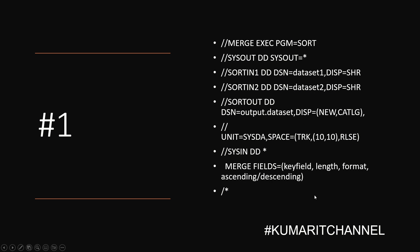You can definitely use this merge sort card. You have to specify different parameters like key field — what is the key field in these two data sets, what is the length of that, and what is the format — whether it's ascending or descending order. As you know, mainframes can process millions of instructions per second (MIPS), so millions of records can be copied in seconds. This makes it very useful and important.